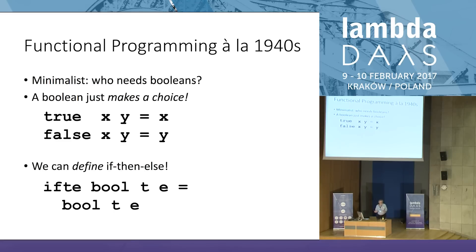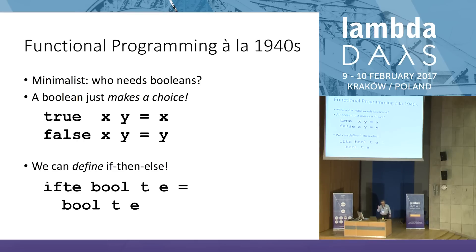I've defined two functions — true and false — but can I use them like Booleans? Let's see if I can define if-then-else. It takes a Boolean, a then-branch T, and an else-branch E. I choose between them using the Boolean. I can do that just by calling the Boolean: if I get true, that returns the then-branch; if I get false, that returns the else-branch. So I don't need Booleans in my programming language if I have functions. Isn't that cool?